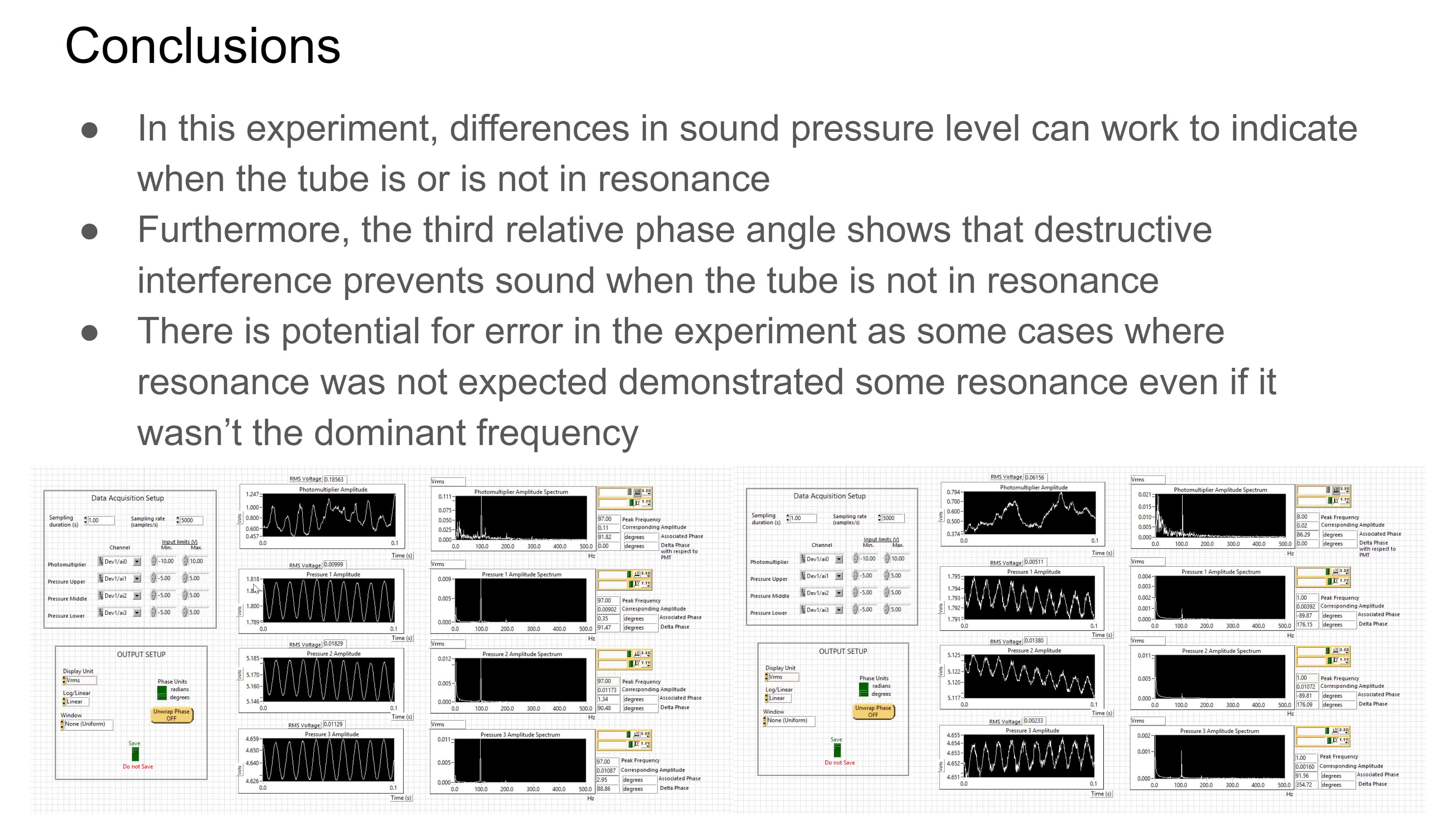So case one, we're expecting to see perfect resonance and that is pretty clear here. Case two, we're expecting to see no resonance, but obviously these pressure readings still have a bit of a sinusoidal shape to them. And we still see a spike at that 95 Hz mark along each of these. So obviously the tube is not perfectly out of resonance. There's still some unique conditions playing a role in the room at the time.